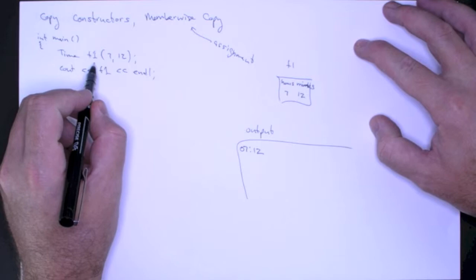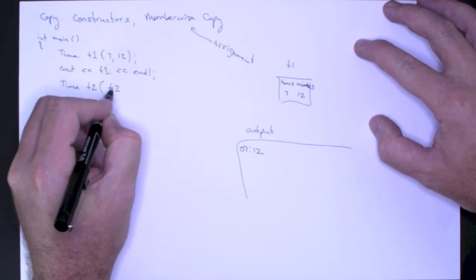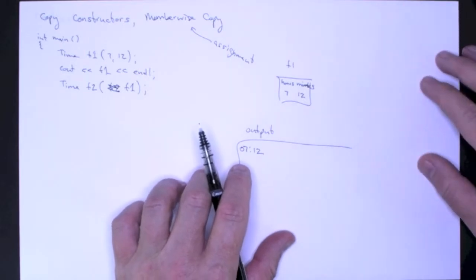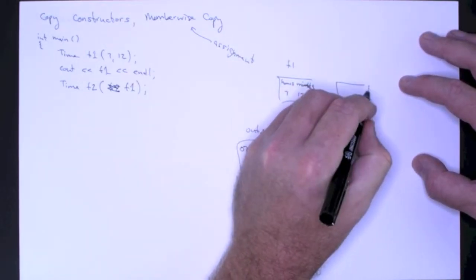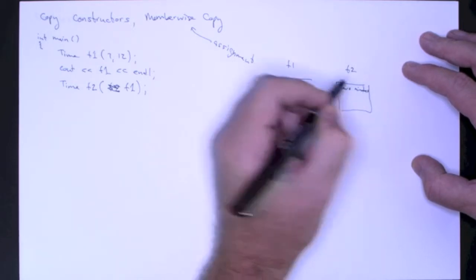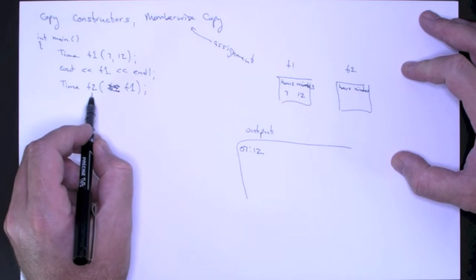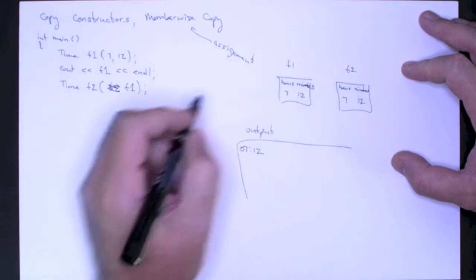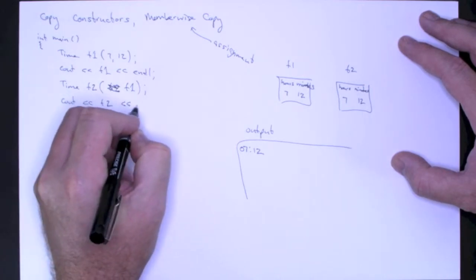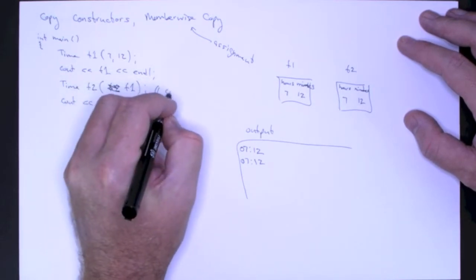Now if I want to make a copy, if I want to construct another time object, T2, using T1, then this is a call to the copy constructor. And what's going to happen is, out in memory, I get space allocated for the time object T2. Of course it has hours and minutes. And the copy constructor copies the values for the private data members from T1 into T2 to construct it. So T2 will be a perfect copy of T1, and now if I see out T2, I get the same output. So this is an example of a copy constructor.